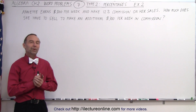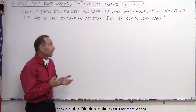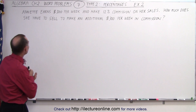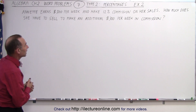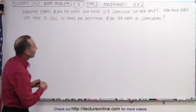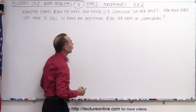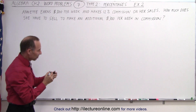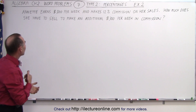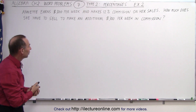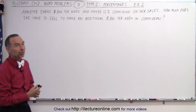Welcome to iLectroOnline. Our second example dealing with percentages reads as follows. Annette earns $300 per week and makes 12% commission on her sales. How much does she have to sell to make an additional $300 per week in commission?